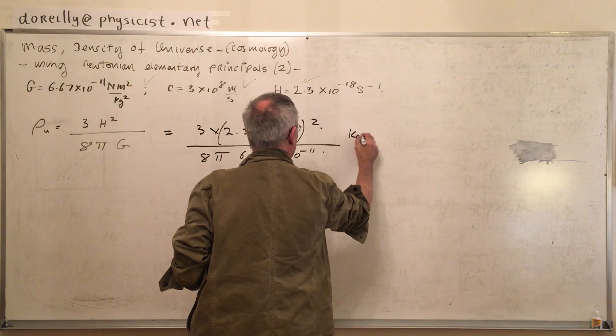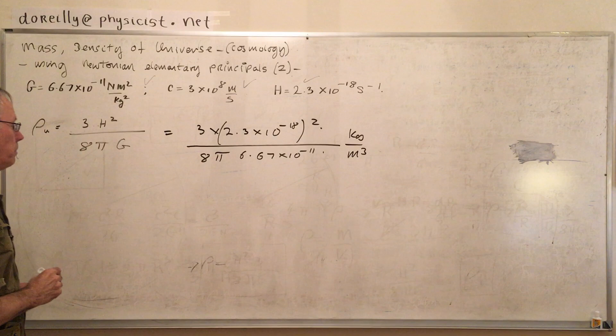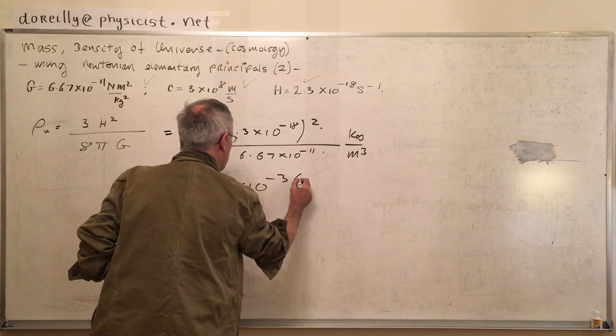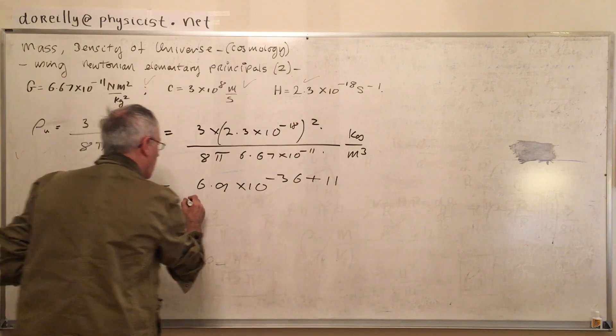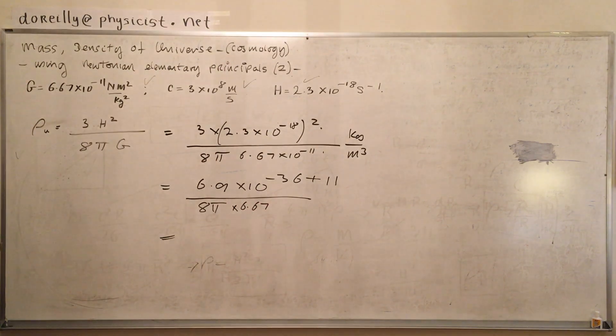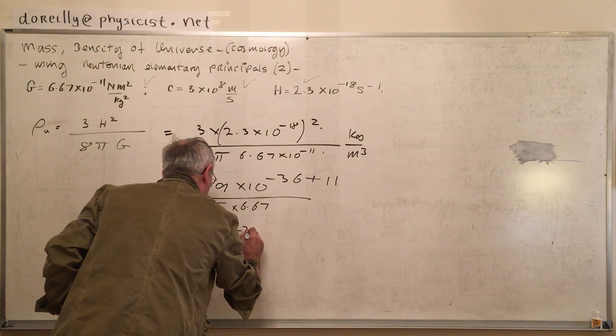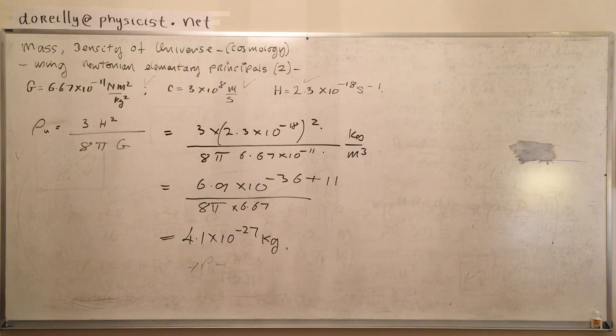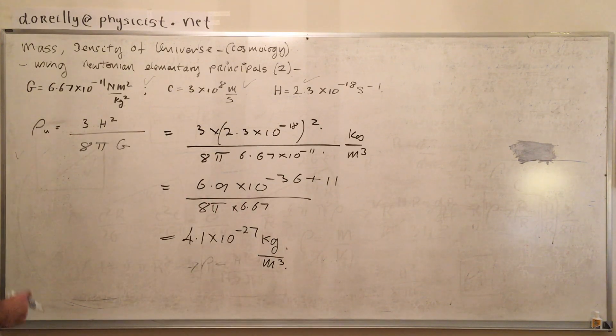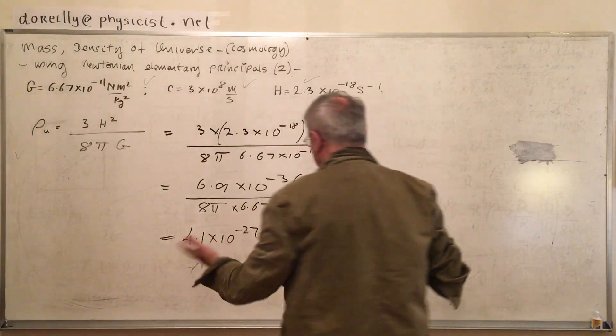So now we put in all the numbers. ρ = 3H²/8πG. Now, this is going to be kilograms per meters cubed. I'm not bothering to hang around with all the units. 3×(2.3×10⁻¹⁸)² / (8π×6.67×10⁻¹¹). So I get for this, kilograms per cubic meter, 4.1×10⁻²⁷. Let's think about that number.